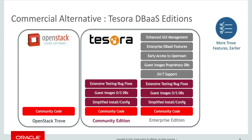You can get a guest image that is pre-configured and ready to go, and has been extensively tested — for example, MySQL 5.6 on Red Hat Enterprise Linux 7. Given that Tesoro is the number-one contributor to Trove today — by far the biggest contributor in Kilo and expected to remain so in Liberty — they also offer an Enterprise Edition with 24/7 support and additional management tools.